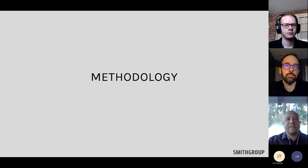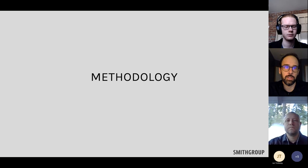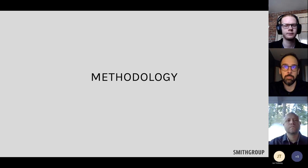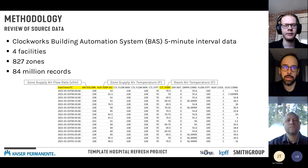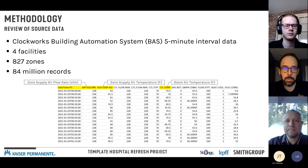Now jumping into the methodology section. This analysis started with a single facility at San Leandro Hospital and grew over the course of the project to four facilities. The core data is sensor data received from the Clockworks building automation system at five-minute intervals — a total of 827 zones comprising over 84 million records.